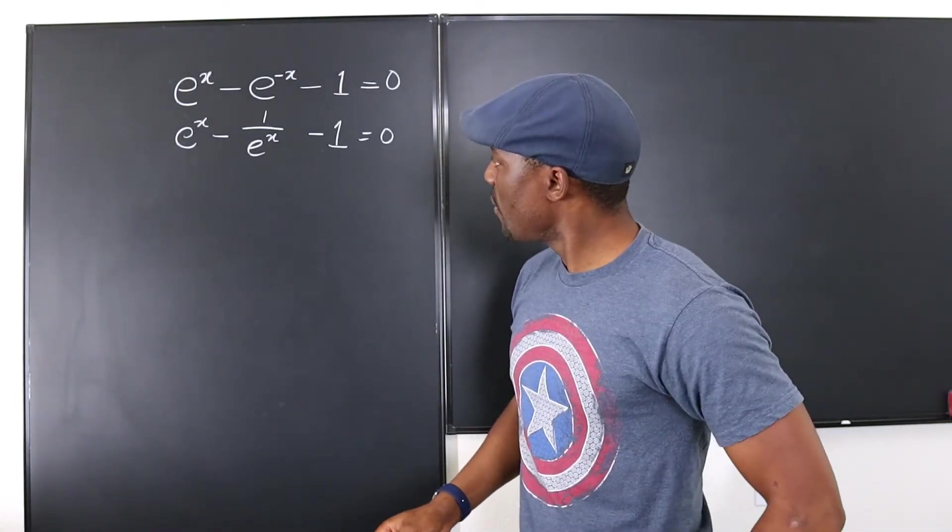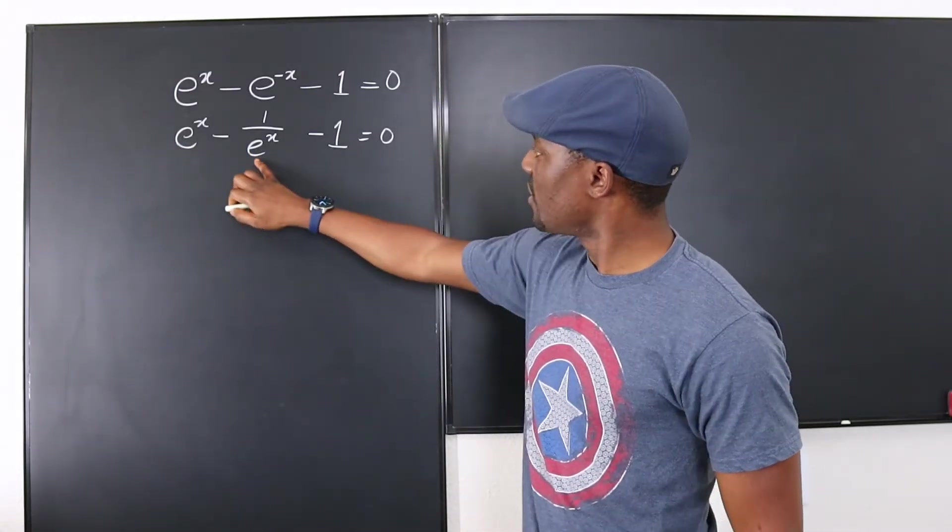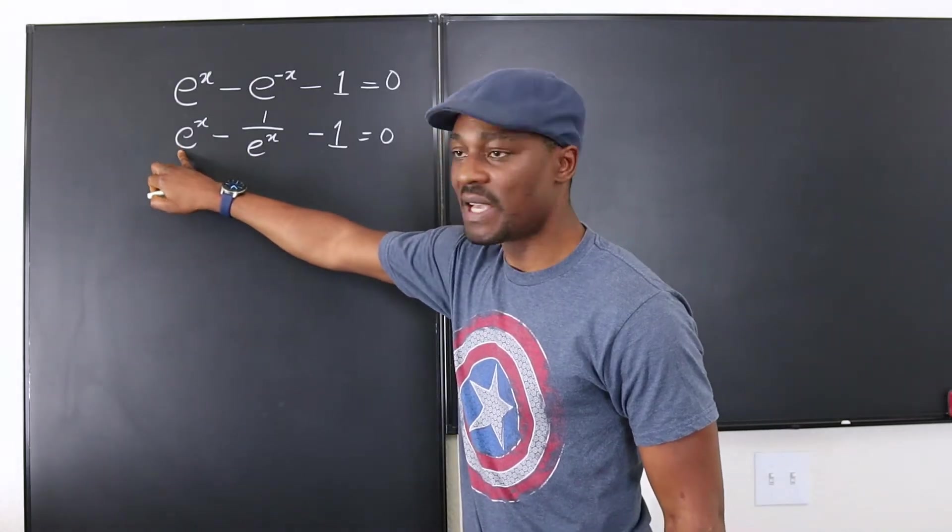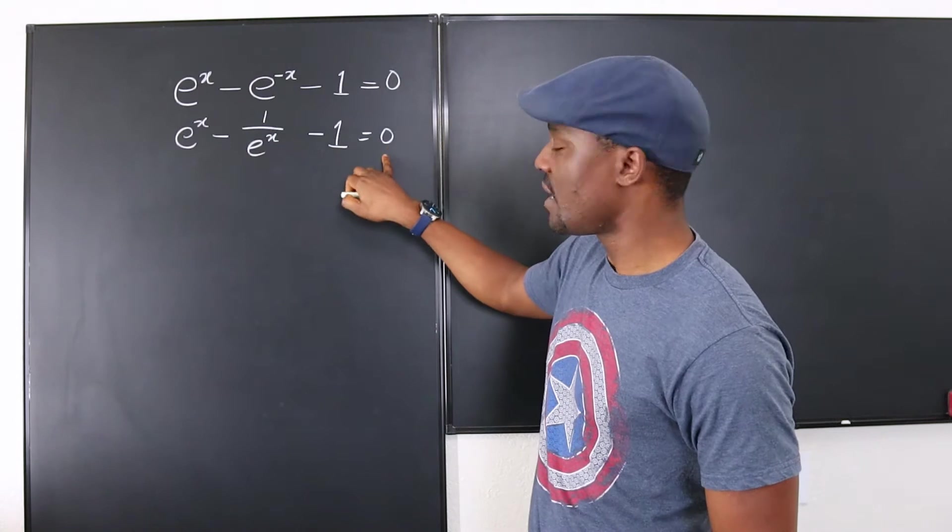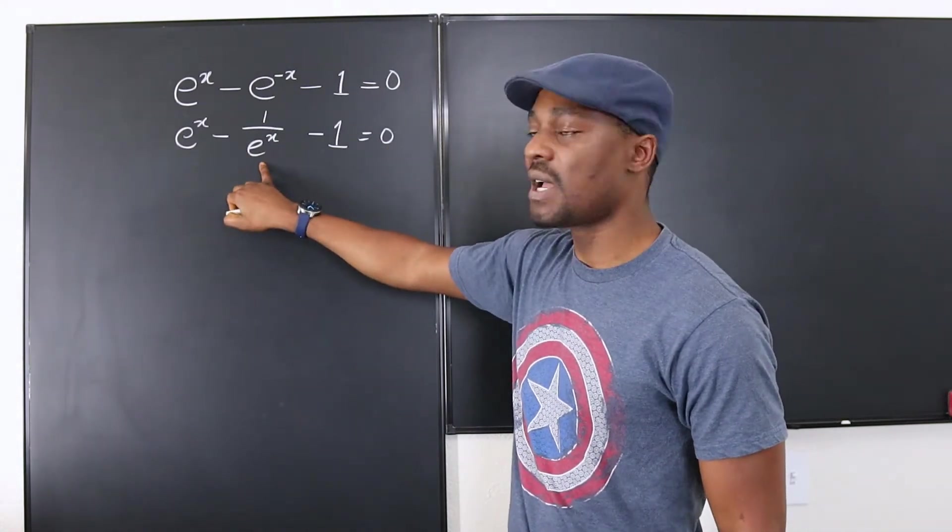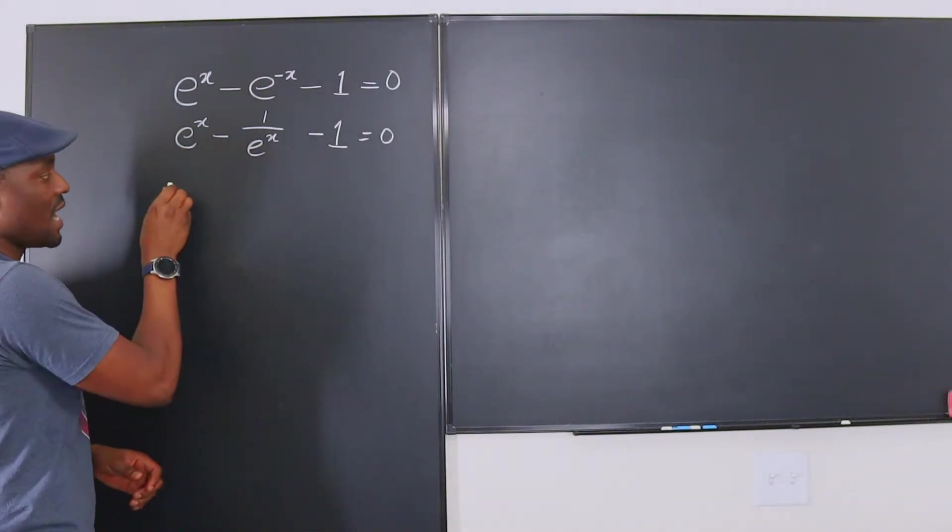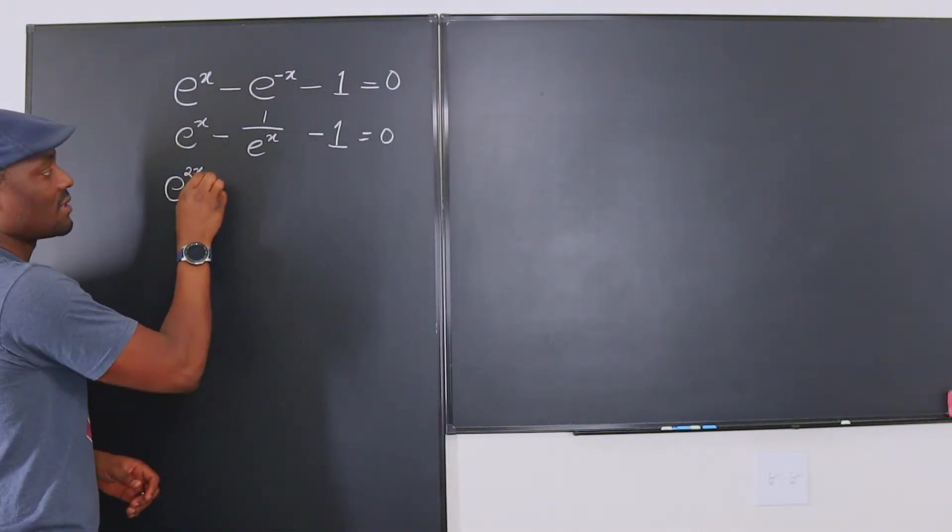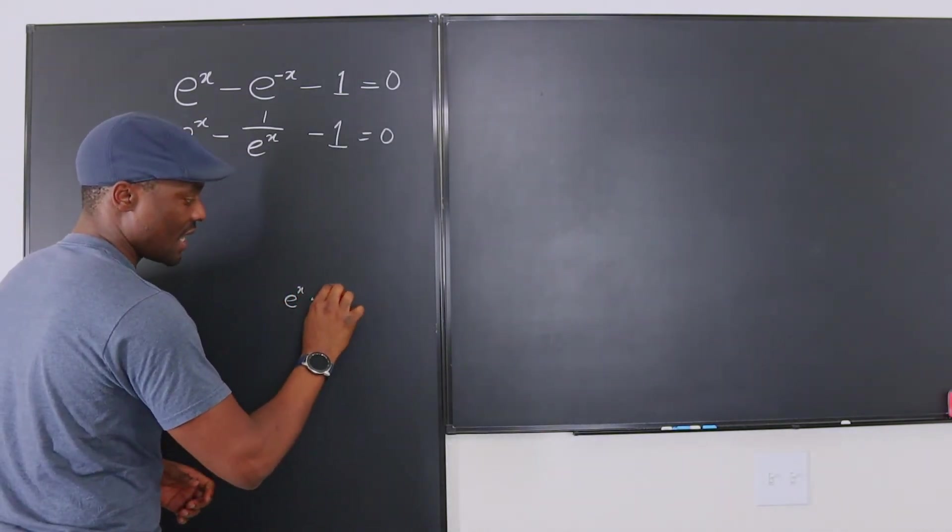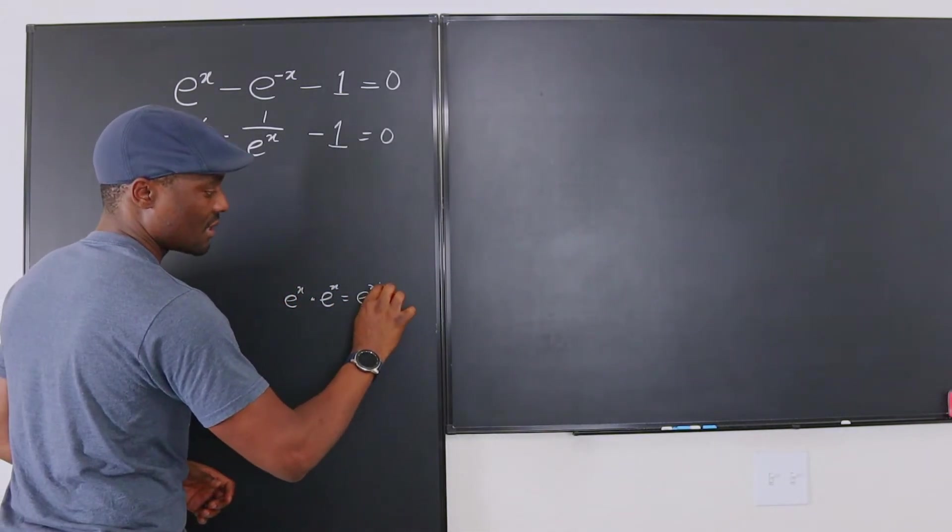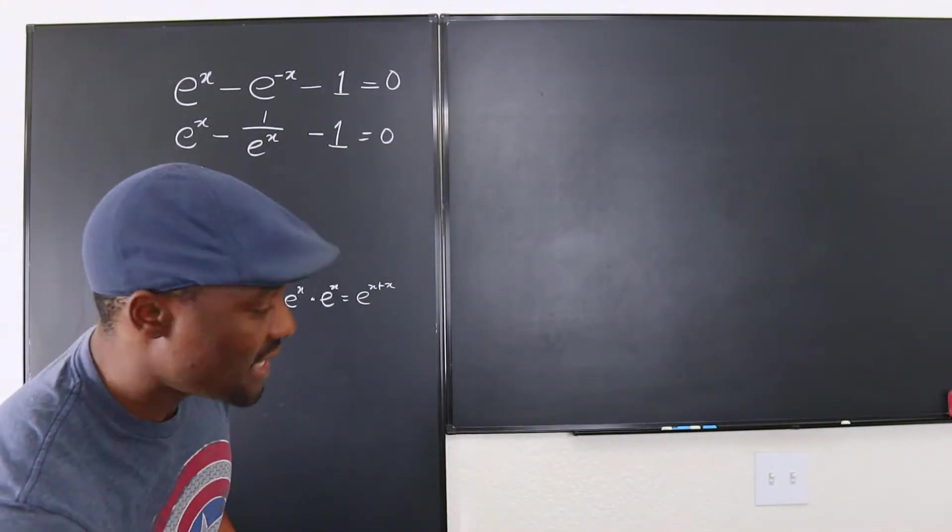So at this point what we want to do is multiply each term by the least common multiple which is e to the x. So we're going to multiply this by e to the x. Multiply this by e to the x. The same thing here. Every term must be multiplied by e to the x. And see what we're going to end up with? If you multiply this by e to the x you end up with e to the 2x because that's going to be e to the x times e to the x which would be e to the x plus x which gives you e to the 2x. That's what that is.